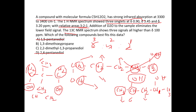We get three singlets with chemical shifts of δ 0.9, 3.45, and 3.2 ppm. The ¹³C NMR spectrum shows three signals. There are three different kinds of carbon: the methyl carbon, the CH₂ carbon, and the quaternary central carbon. In the proton NMR you won't see a peak for the quaternary carbon, but in ¹³C NMR you will see a signal for it.